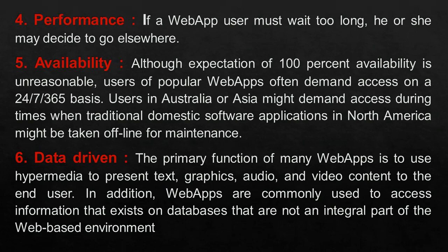The fifth point is availability. Availability and reliability are concerned with keeping the relevant services that support your web application available at all times. Although an expectation of 100% availability is unreasonable, users of popular web apps often demand access on a 24/7/365 basis.